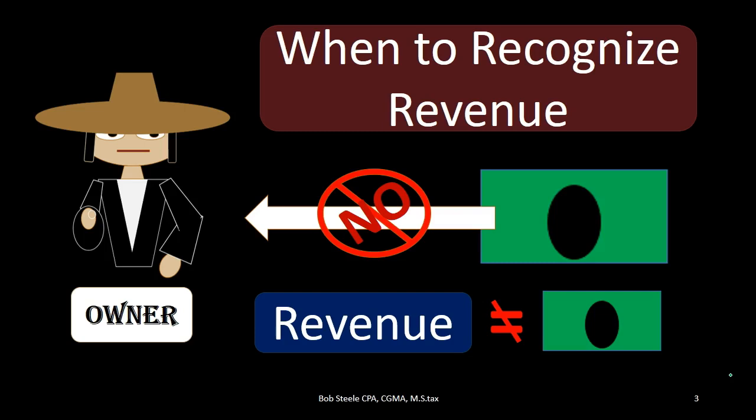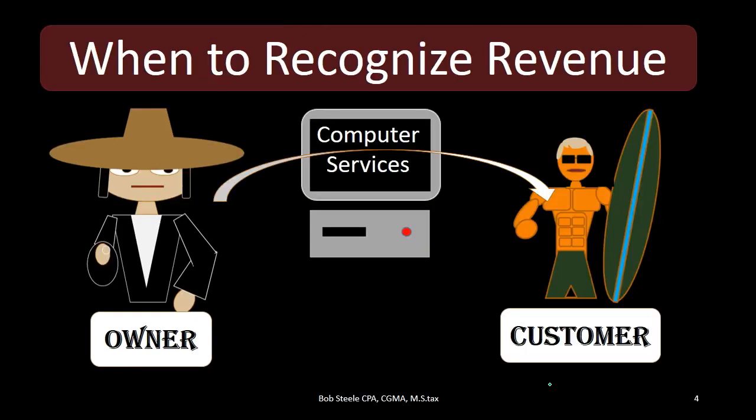This leads to the idea of what is revenue versus cash. Revenue represents the earning of revenue, and we have to measure that in terms of dollars. We're going to say we earned so many dollars worth of revenue even though possibly we have not yet received the cash. However, revenue is not necessarily recognized at the point in time cash is received — it might be recognized before or after, depending on the circumstances.